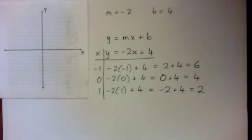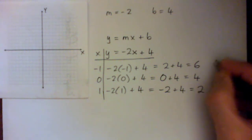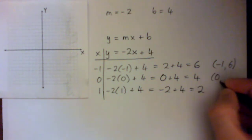And negative 2 plus 4 is 2. So our points would be, and we don't have to do the ordered pairs, but I'll do it just to beat it to death. But you would have x is negative 1, y is 6. You would have x is 0, y is 4. You would have x is 1, y is 2.